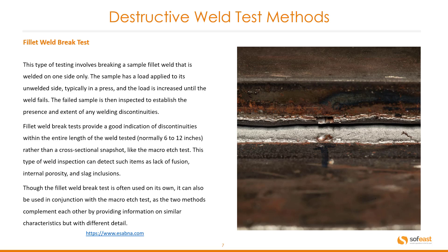This type of weld inspection can detect such items as lack of fusion, internal porosity, and slag inclusions. Though the fillet weld break test is often used on its own, it can also be used in conjunction with the macro etch test, as the two methods complement each other by providing information on similar characteristics but with different detail.